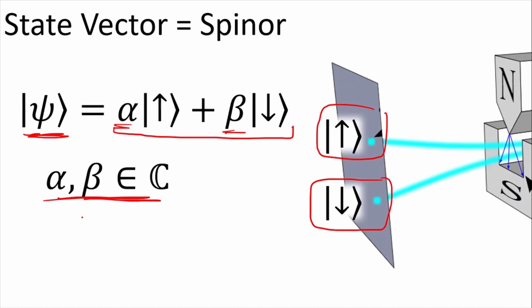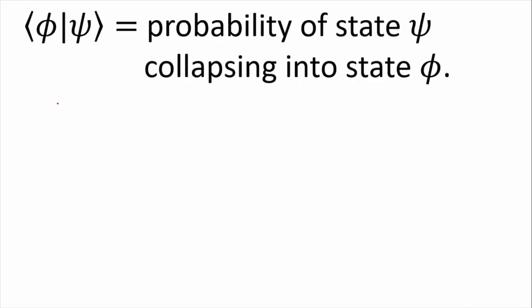We have bra vectors and ket vectors. Bra vectors are like functions on ket vectors that give you a scalar. The inner product here is the probability of a state psi collapsing onto state phi when we observe it. Someone confirms: yes, that's accurate.